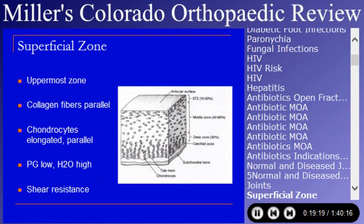Articular cartilage has zonation — a common concept tested on. The very uppermost layer has cartilage fibers oriented parallel to the joint surface; the chondrocytes are elongated and parallel to each other. There is relatively little proteoglycan and relatively more water in that layer, and its primary function is shear resistance. The middle zone has collagen fibers of larger diameter that are not well organized.